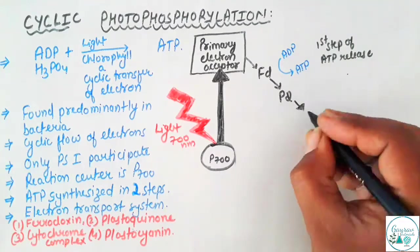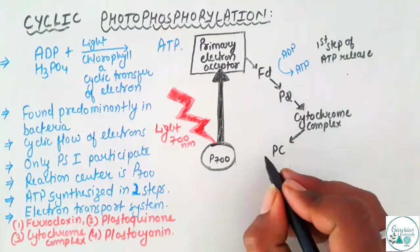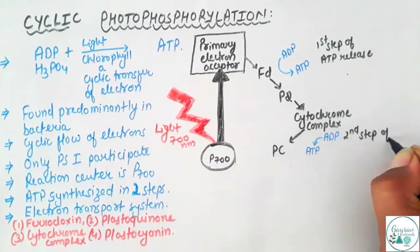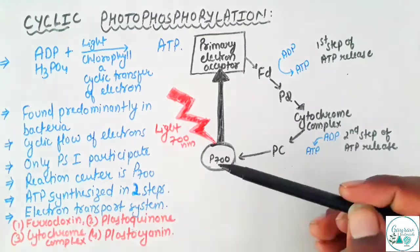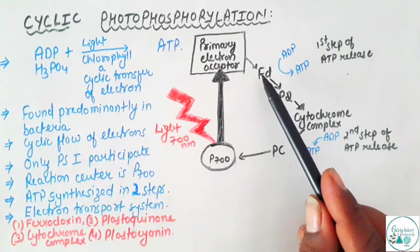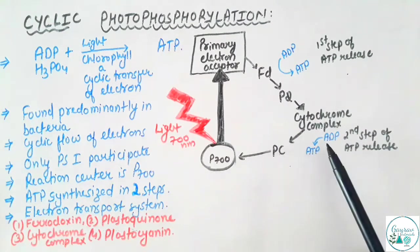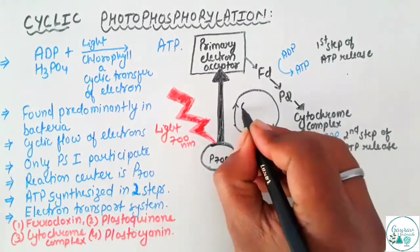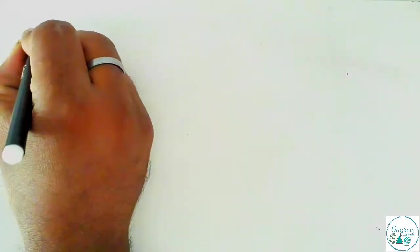The electrons from plastoquinone are passed to the cytochrome complex, and from the cytochrome complex they go to plastocyanin. Again, ADP would be converted into ATP — the second step of ATP release. The electron from plastocyanin would then go back to its sink, which is P700. So what we observed was that light fell on the reaction center, causing excitation of the electron, which is accepted by the electron acceptor. It passes through the electron transport system whereby two ATPs are generated, and the electron comes back to its origin. Since the electron travels back to its origin and creates the phosphorylation of ADP, the process is called cyclic photophosphorylation.